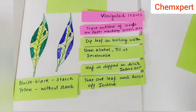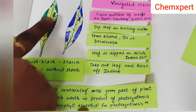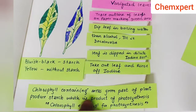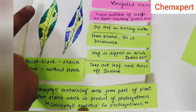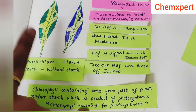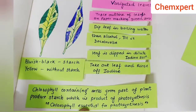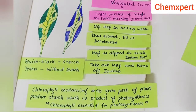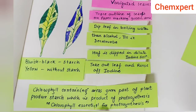The final conclusion is that the chlorophyll-containing areas are the green parts of the plant, and they produced starch, which is a product of photosynthesis. When the variegated plant was kept in sunlight, photosynthesis took place only in the green portions because the green color of a leaf is due to chlorophyll. Because of chlorophyll, starch is produced and photosynthesis takes place. Therefore, chlorophyll is essential for photosynthesis — this is the main aim of this activity.